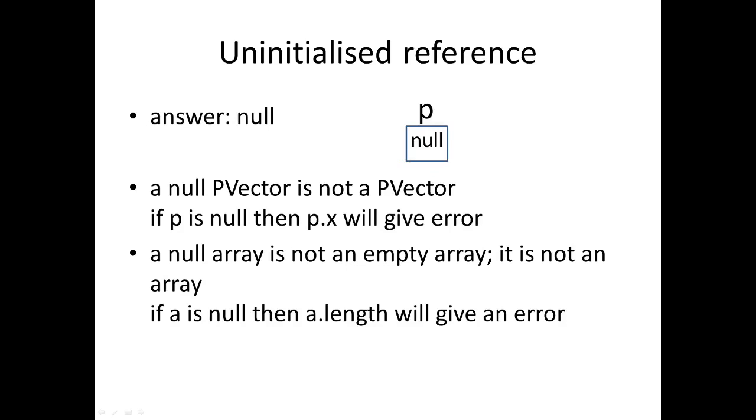We can draw a little memory diagram for it and show p has a value of null inside it. Null just indicates that this reference isn't a reference to anything - it's like an empty reference. It's an absence of a pointer. So a null PVector is not really a PVector, because you can't do anything to it. If p is null, then p.x doesn't mean anything because p doesn't reference any memory block that is a PVector. Null - you just can't do anything with it.